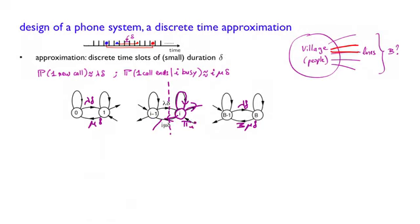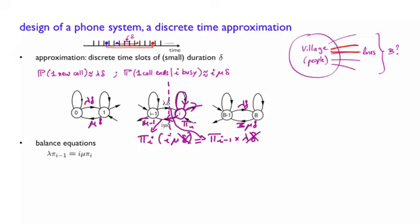The frequency of transition of this type will be, if you look at pi i here and pi of i minus 1 here, this transition here will happen with pi i times i mu delta. And the transition of this type here will be pi i minus 1 times lambda delta. And the frequency of these transitions have to be the same as the frequency of these transitions. So we have that equals that. And then we can cancel the delta in both. And we are left with this equation here.